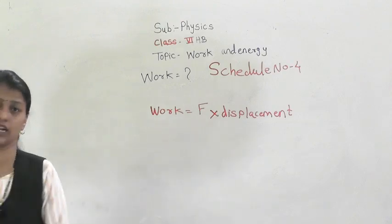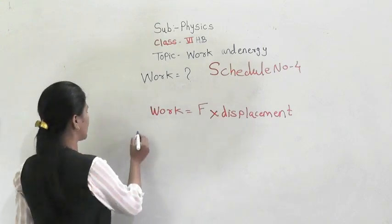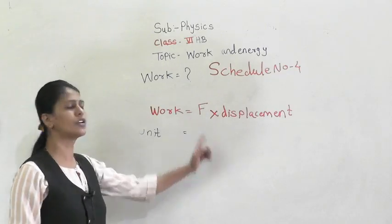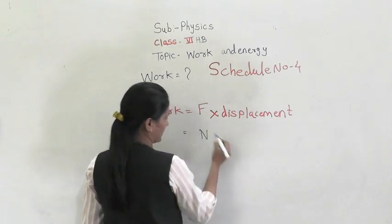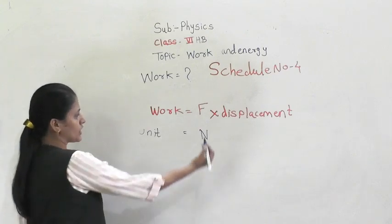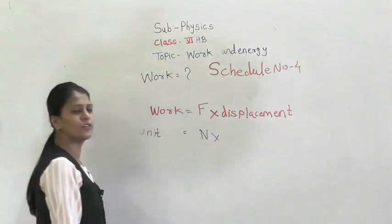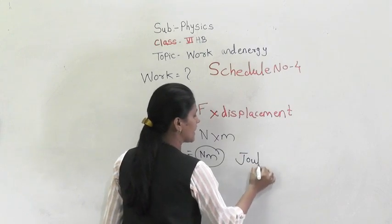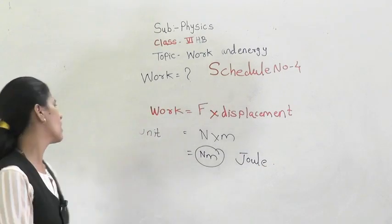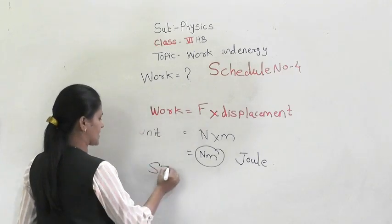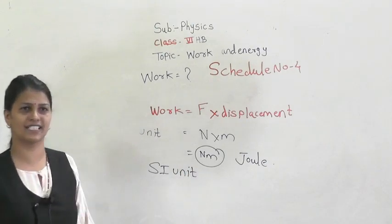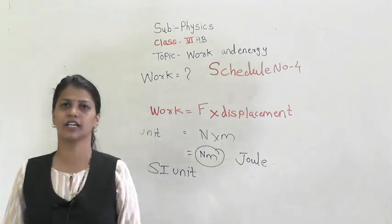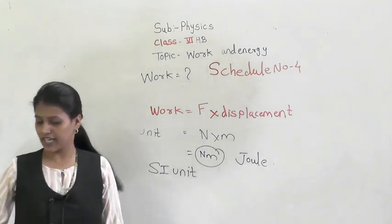Can you tell me what will be the unit of work? We will find the unit of work now. The unit of force is newton, and to measure displacement we take the unit meter. So newton into meter — this is nothing but what we call a joule. The SI unit of work is joule. SI stands for System International. The SI unit of work is joule.